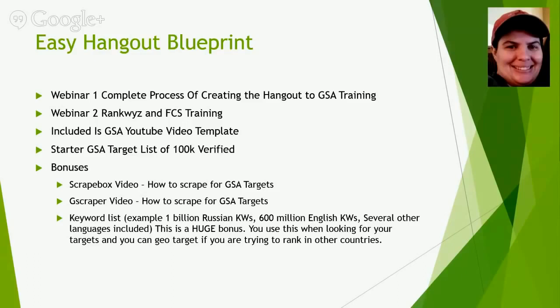You did mention to me before we went live that the starter GSA target list of 100,000 verified is worth about $100. Oh yeah, that alone is worth $100 — I could sell it easily for $100. And then the keyword list — you mentioned one billion Russian keywords and 600 million English keywords and several other languages included. Will we do some basic training on how those are used? Yep, I'll put those into the ScrapeBox and the Gscraper. Actually, I am going to be including a footprint list with the keyword list because you have to have footprints to scrape. So you'll have the list and the footprints.